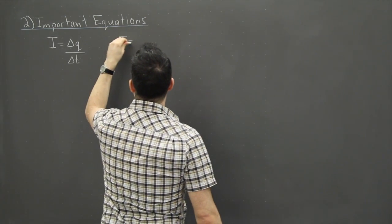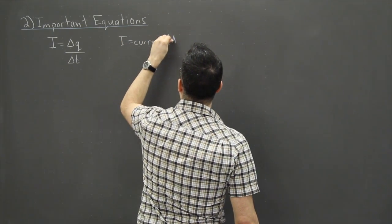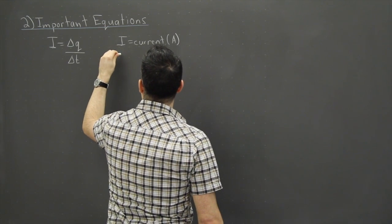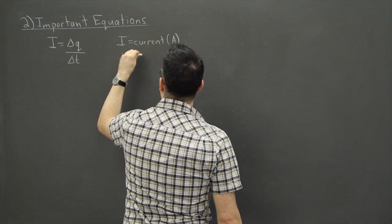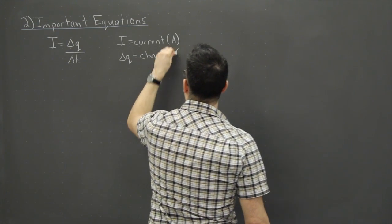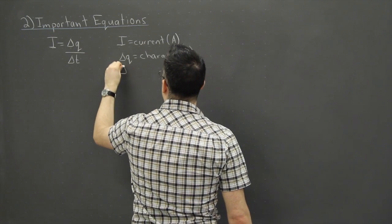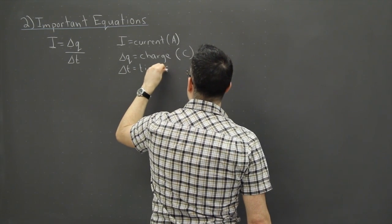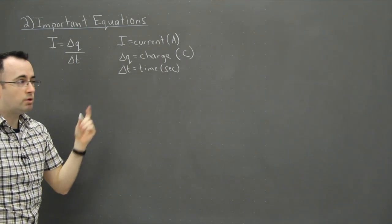I is the current, measured in amperes. Delta Q — or just Q — is charge, or more precisely a change in charge, measured in coulombs. And delta T is time, measured in seconds. So that's a very useful equation to use.